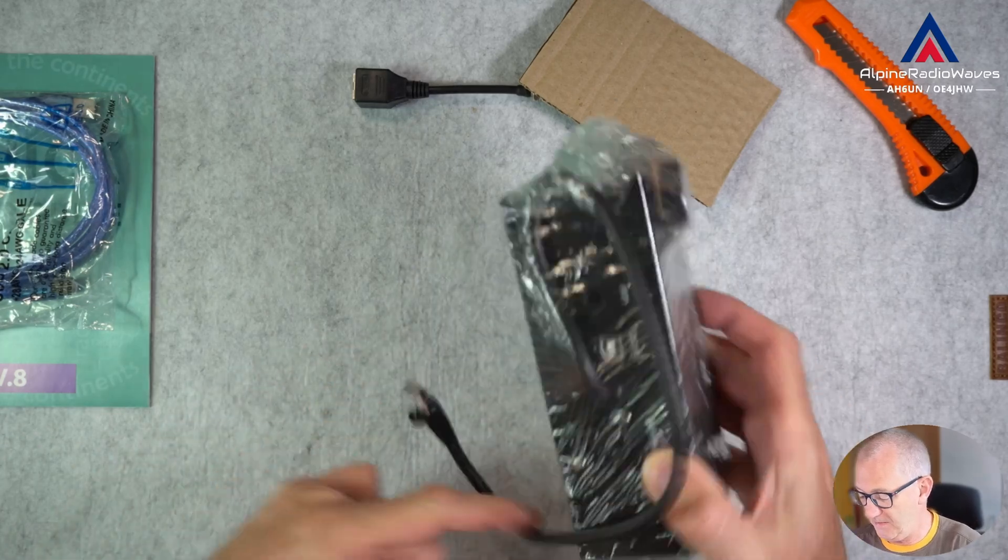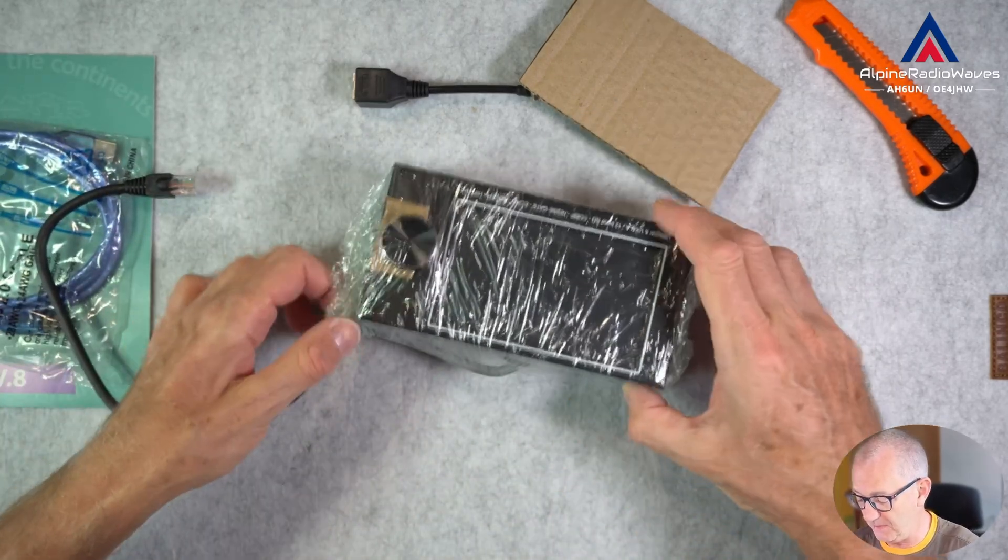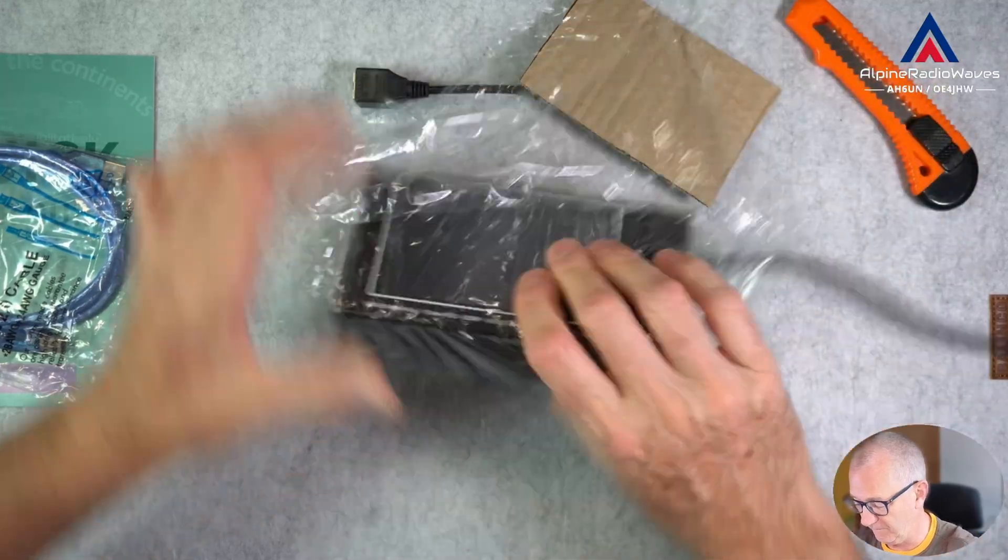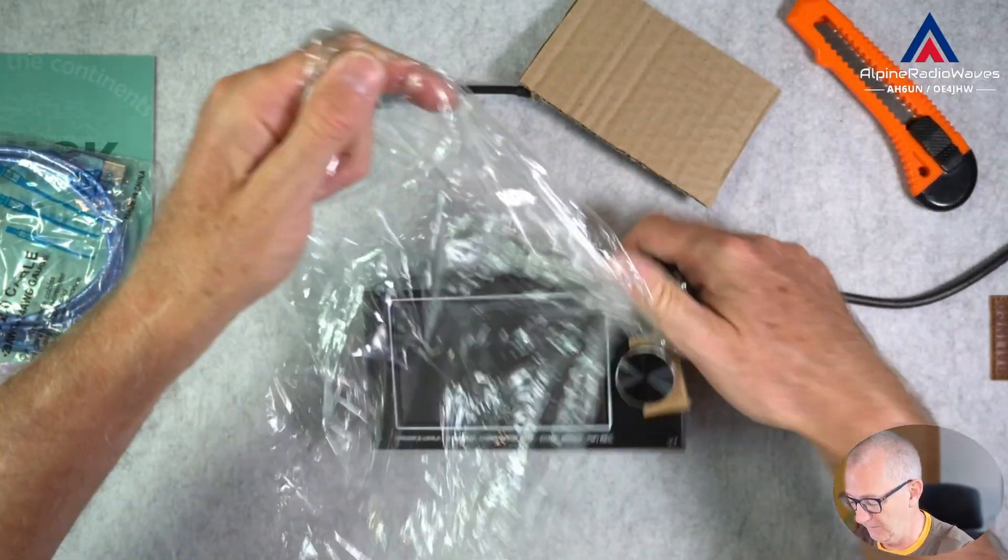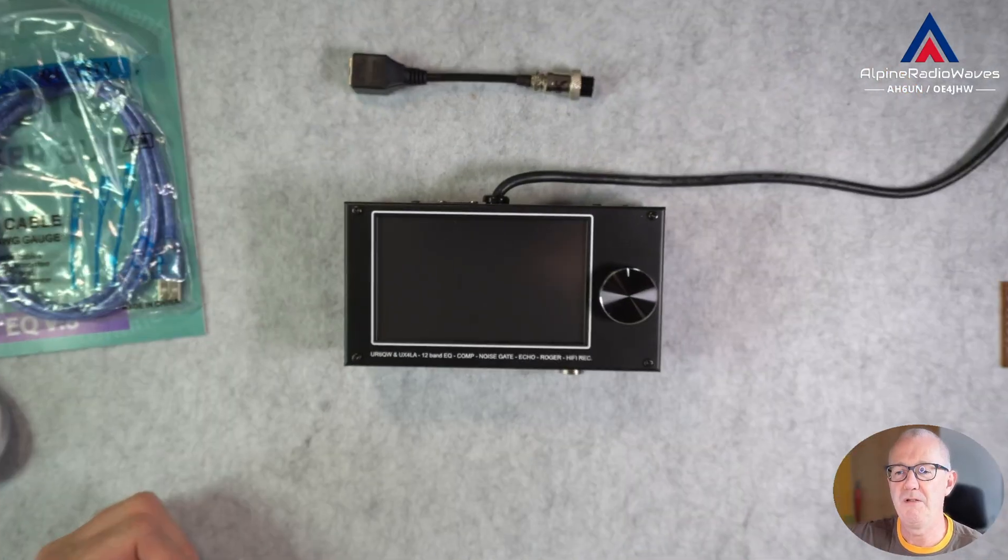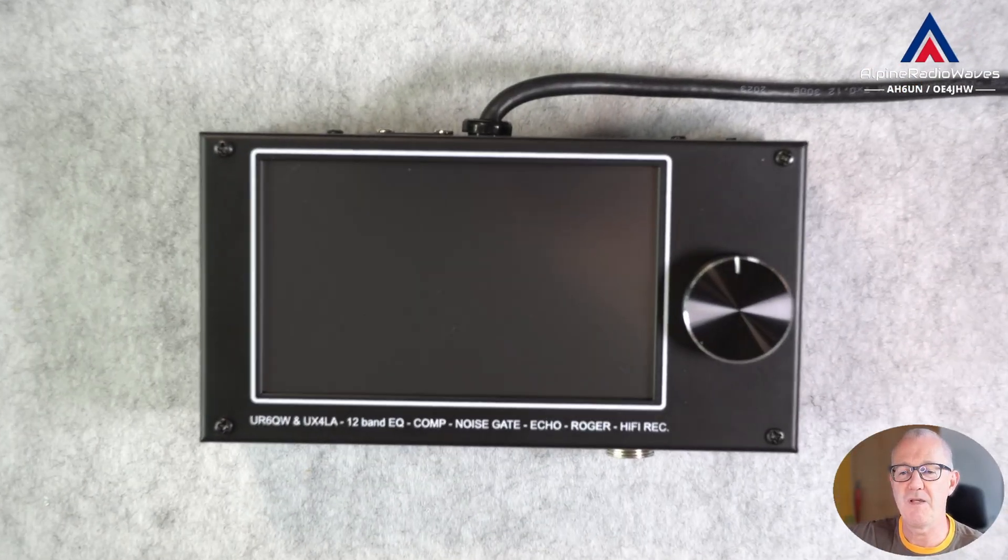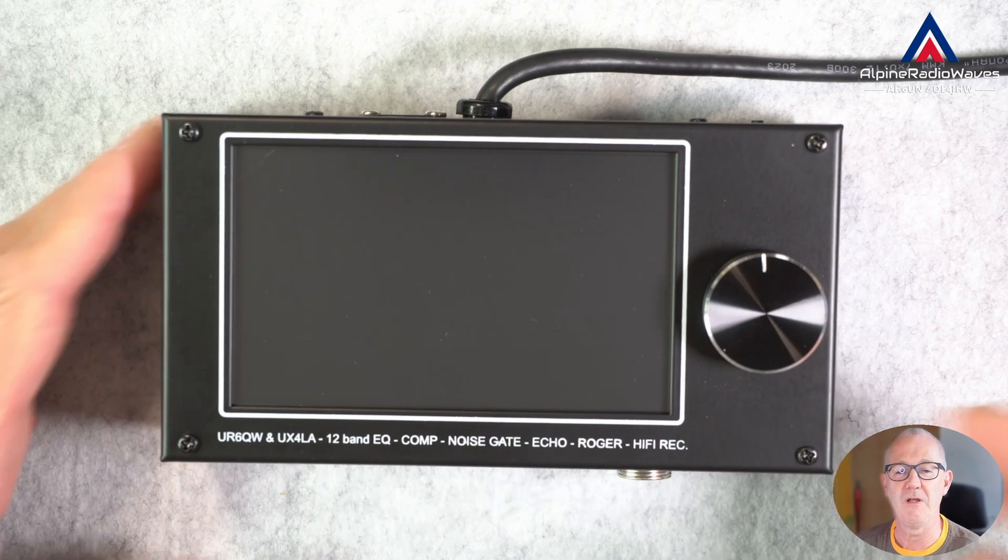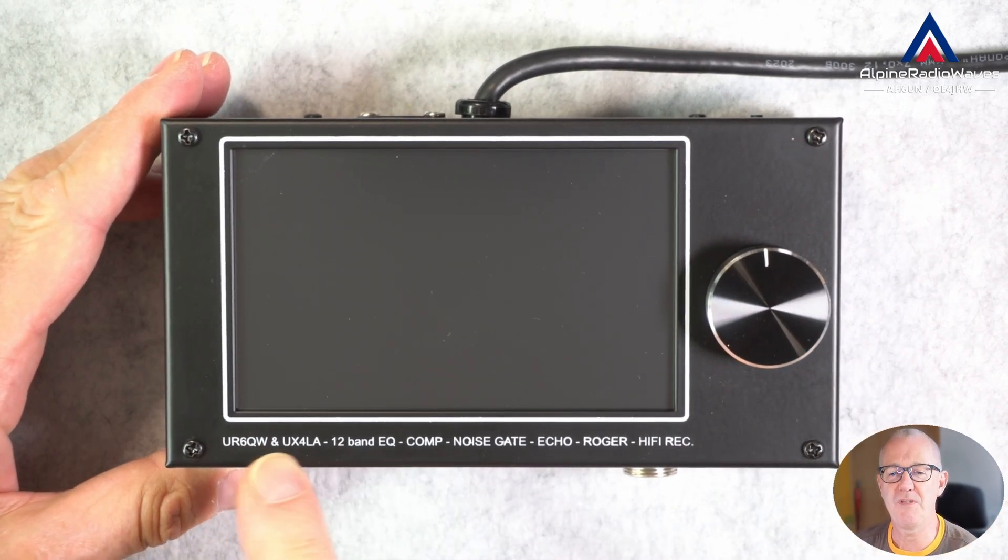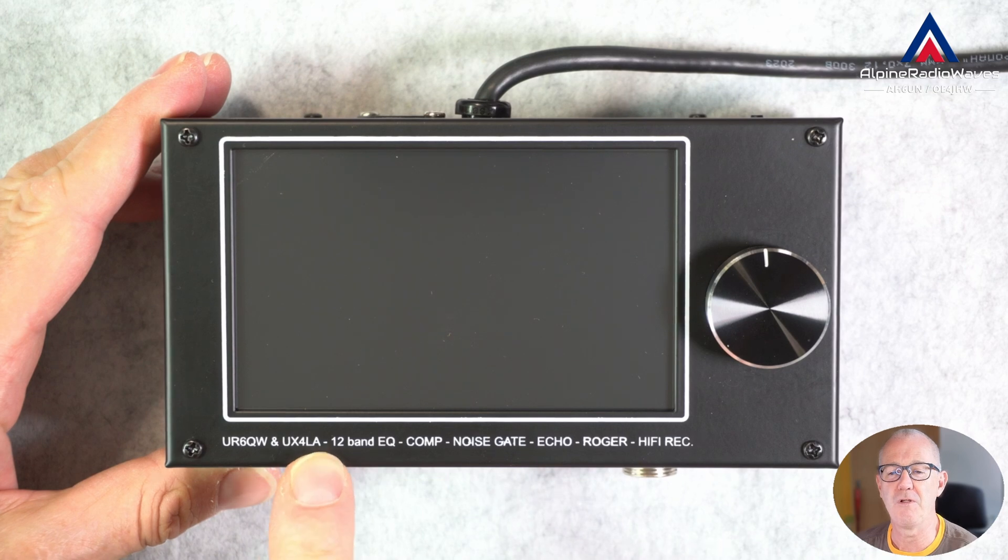And here is the equalizer. Here we go. Let me zoom in a little bit. Then you have a better view. So here is the equalizer made by United Radio 6 Quebec Whiskey and United X-Ray 4 Lima Alpha.